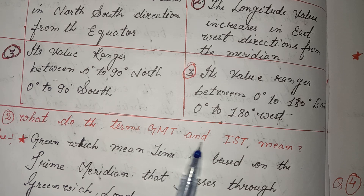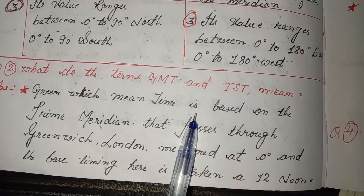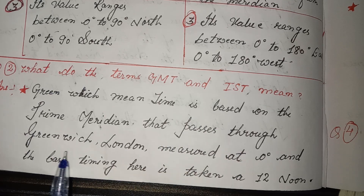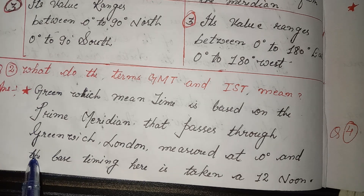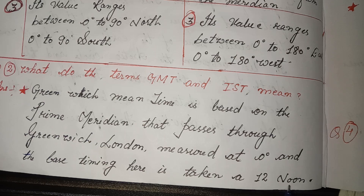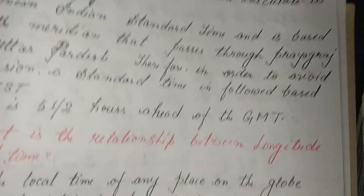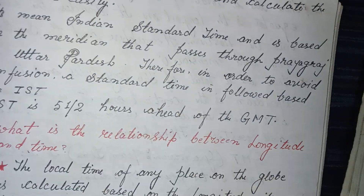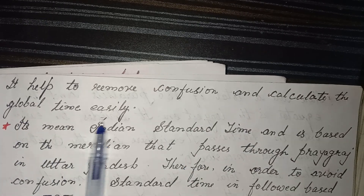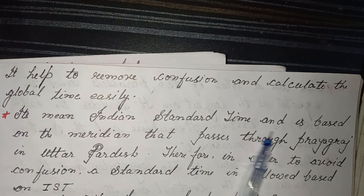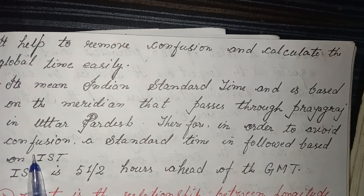Second: what do the terms GMT and IST mean? Greenwich Mean Time is based on the prime meridian that passes through Greenwich, London, measured at 0 degrees, and the base timing is taken as 12 noon. It helps to remove confusion and calculate time across the globe easily. IST means Indian Standard Time and is based on the meridian that passes through Prayagraj in Uttar Pradesh.